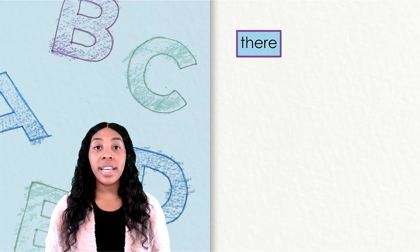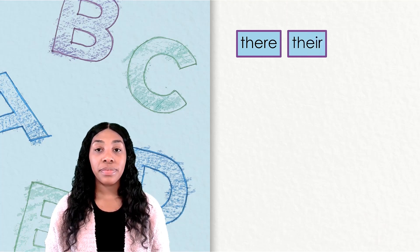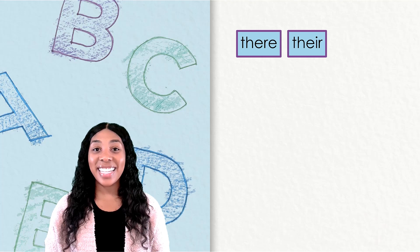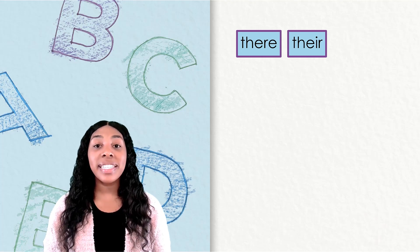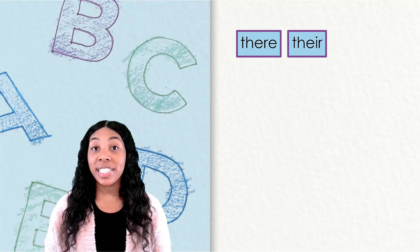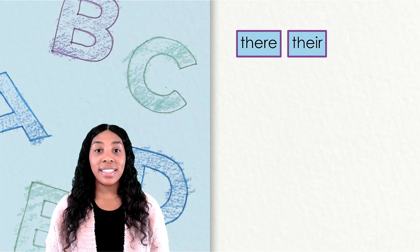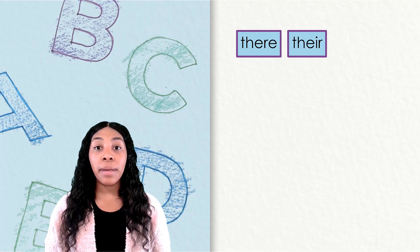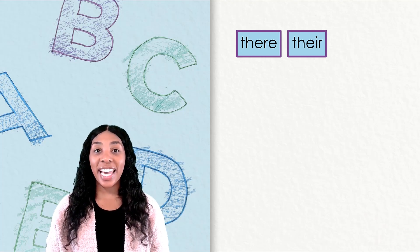What does this 'their' mean? T-h-e-i-r means something that belongs to people. It shows possession, as in this sentence: The family brought their dog on vacation.